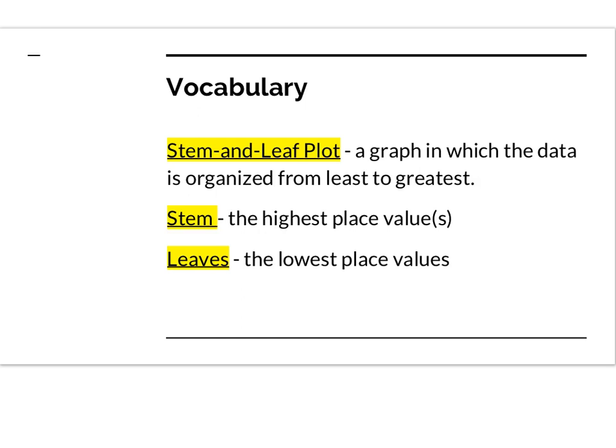A stem-and-leaf plot is a graph in which the data is organized from least to greatest, and then it's broken into a stem and a leaf. The stem is the highest place value or values, while the leaves are the lowest place values.